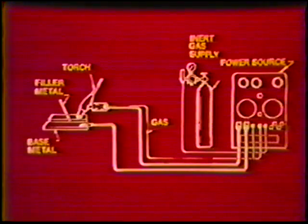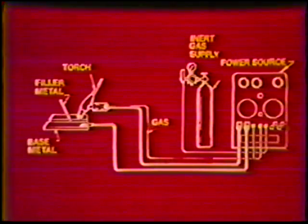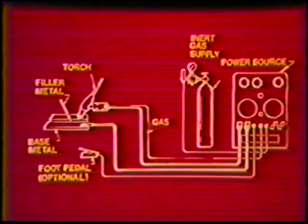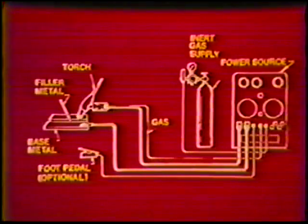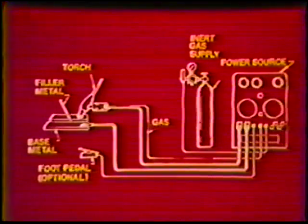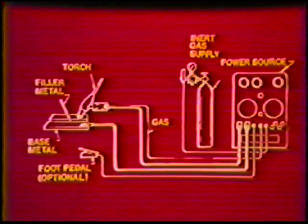There are several different types of weld current remote controls for manual welding. One of these is a foot control which activates the weld current, shielding gas flow, and cooling water flow when pressed. The foot control may also be equipped with a rheostat to vary the current during welding. This type of control is commonly used on aluminum for cratering out. For this procedure, the weld current remote control switch must be on.